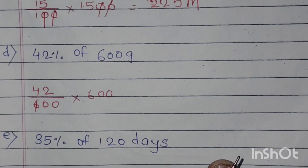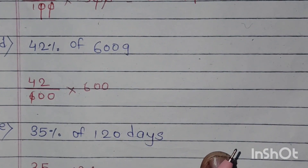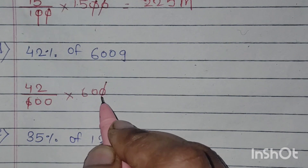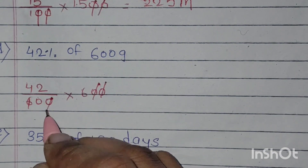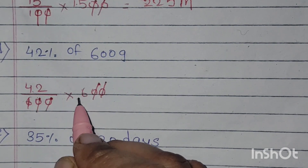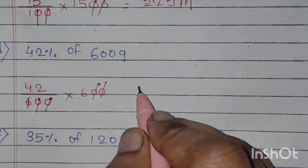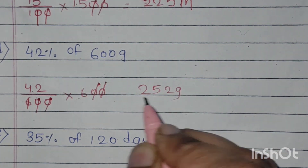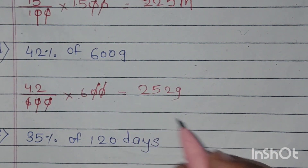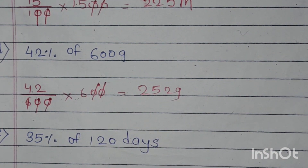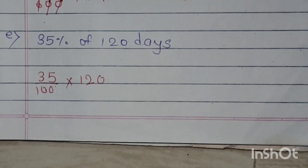42% of 600 grams: again the zeros get cancelled and 42 into 6 is 252 grams. I hope आपको multiplication अच्छे से आता है, इसलिए मैं यह direct आपको solve करके दे रहा हूँ।